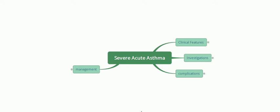Asthma is produced due to airway hyper-responsiveness to certain allergens. Predisposing factors like cold water can also produce asthma. These triggers from the external environment cause airway hyper-responsiveness, leading to an inflammatory response in the airways, mucosal edema, and narrowing of the airways. There is also excessive production of mucus which blocks the airways.